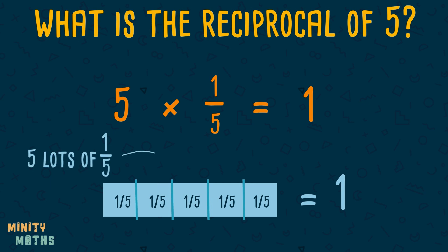Here we can see that 5 lots of fifths add up to 1. In other words, 5 multiplied by 1 fifth is equal to 1. So, the reciprocal of 5 is 1 fifth.